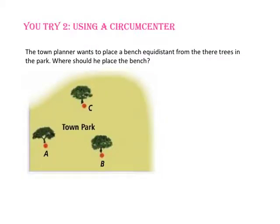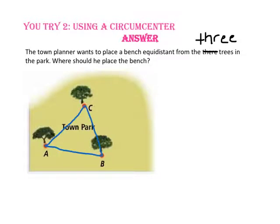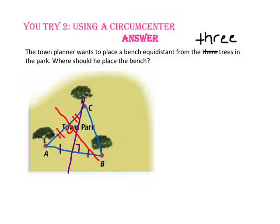Pause the video and do you-try number 2. The town planner wants to place a bench equidistant from the three trees in the park. Where should he place the bench? Let's start by connecting the three trees to form a triangle. Since the circumcenter of a triangle is equidistant from the three vertices, we want to find the circumcenter by creating the perpendicular bisector of each side — segments AB, AC, and BC. The point of concurrency, or circumcenter, of the triangle is the place where the park bench should go, equidistant between the three trees.